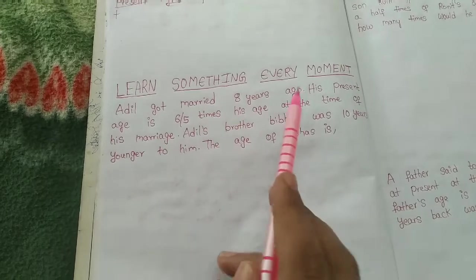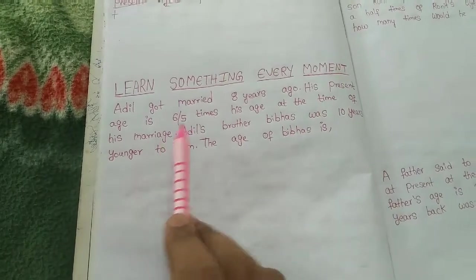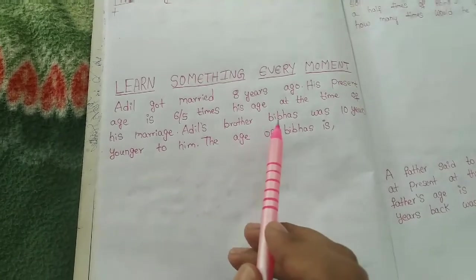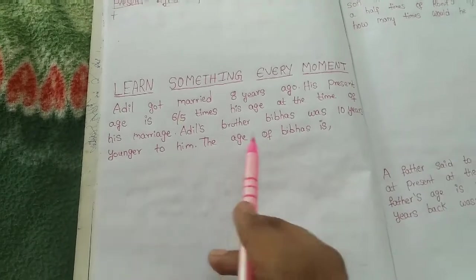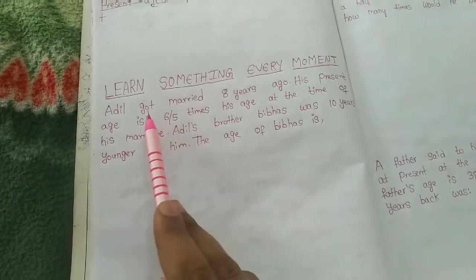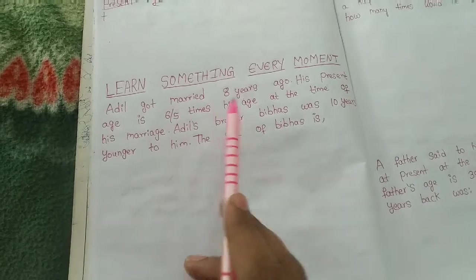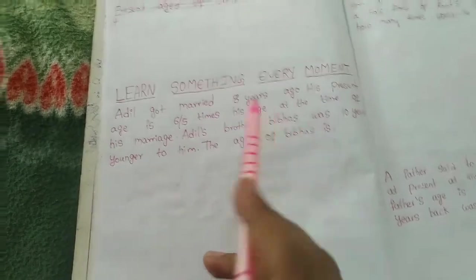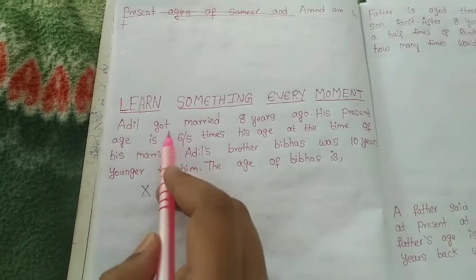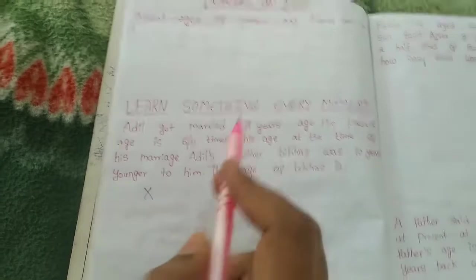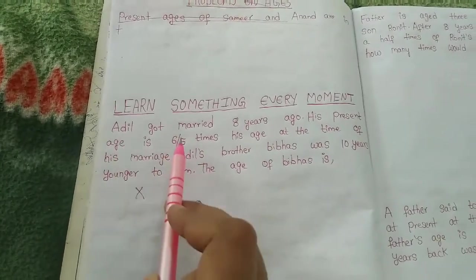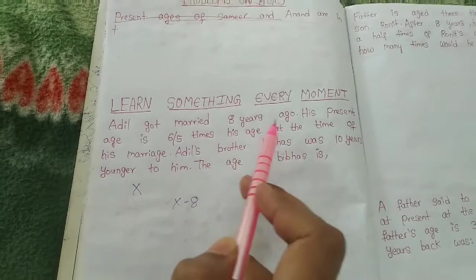What is the question? Adil got married eight years ago. His present age is six-fifths times his age at the time of his marriage. Adil's brother Bibas was ten years younger to him. What is the age of Bibas? Let Adil's present age be X. So Adil got married eight years ago means his age at marriage was X minus eight.